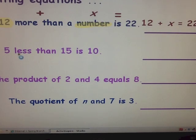Let's try the next one. 5 less than 15 is 10. Let's identify our equal sign. Our equal is 'is'. And our other clue word is less than. Less than means to subtract. Remember, less than means that 5 is less than this 15. So the equation would be 15 minus 5 equals 10.